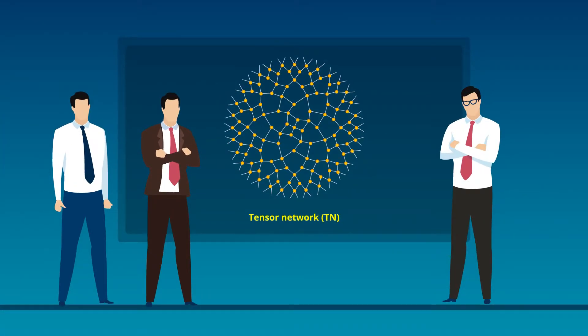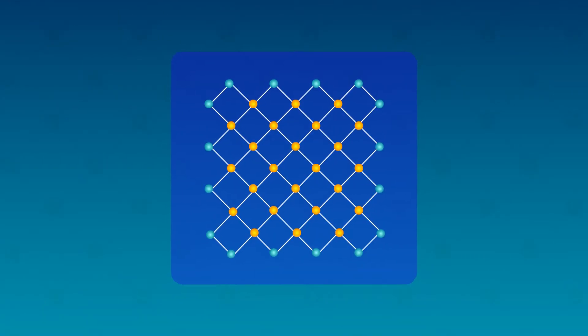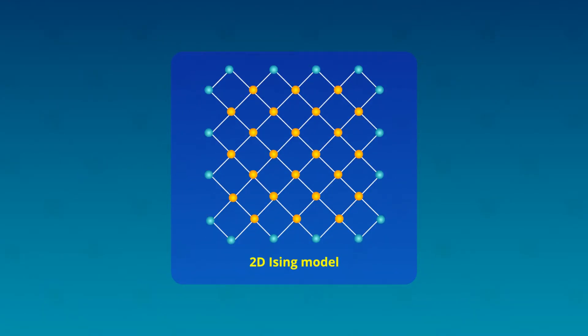a team of researchers from Japan set out to provide a unified description of the developments in TNs from the statistical mechanics perspective. They began by looking at the famous 2D Ising model.